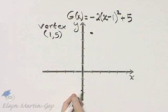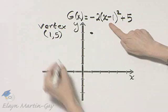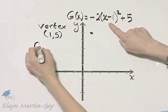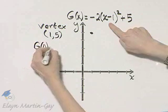Why don't we find the y-intercept? And how do you find the y-intercept? You let x be 0. So what is g of 0?